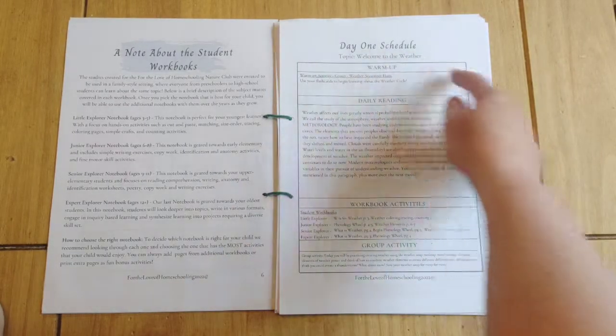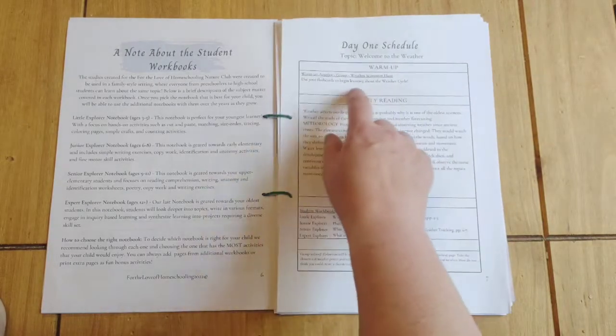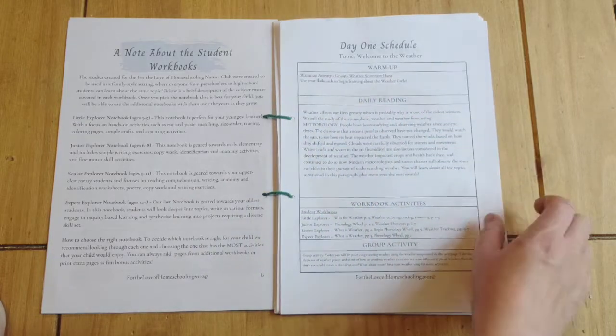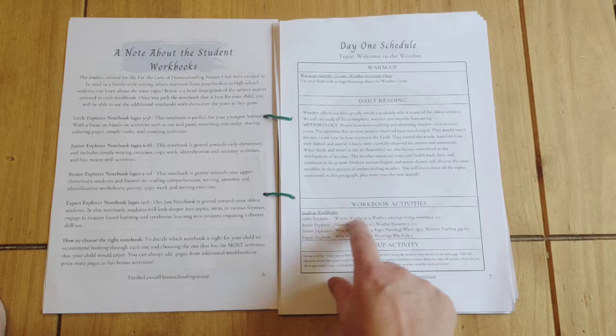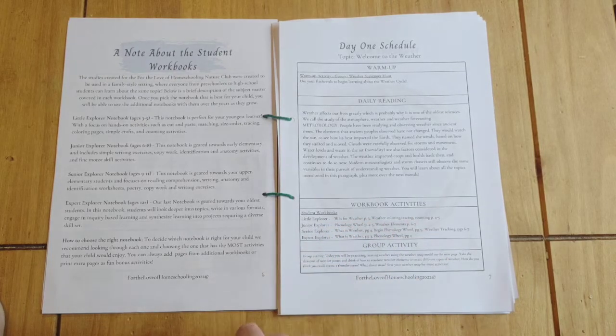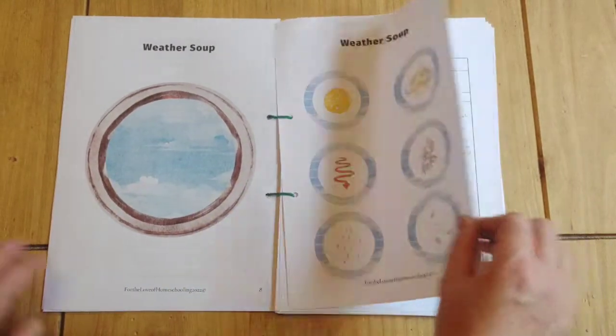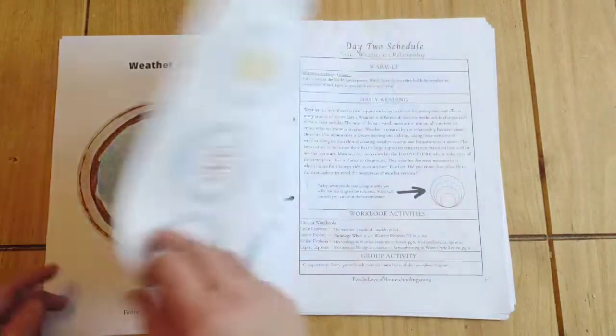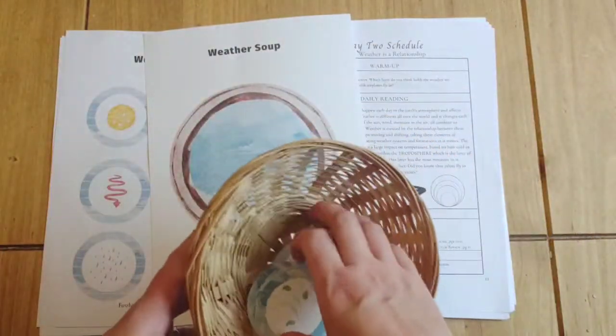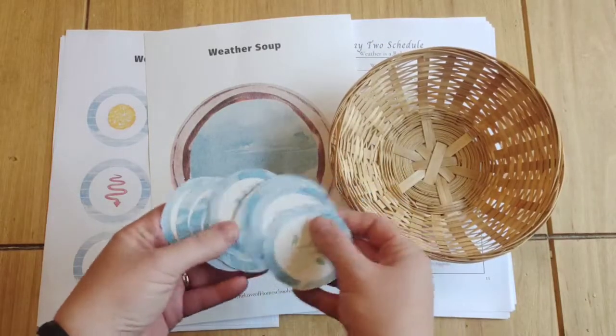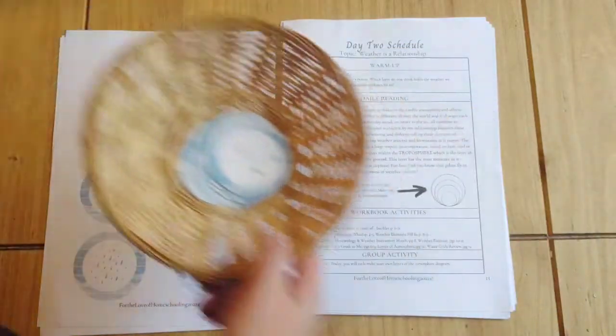The day one schedule would look like this. You'd have a little warm-up, which says weather scavenger hunt, use your flash cards to begin learning about the weather cycle. There's a daily reading. Then it tells you what each of the levels should be doing in their workbook that day, which pages and activities. And then there's a group activity. Weather soup is the one cut out on cardstock, and I think it's to do with making different weathers. We've got those ready to do for that.